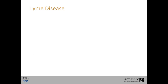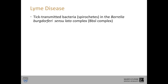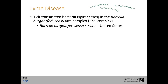Lyme disease is caused by bacteria transmitted by ticks. These bacteria are spirochetes — spiral-shaped organisms shown in the upper right-hand corner of the screen. They are in the large complex called Borrelia burgdorferi sensu latu complex, a group of closely related organisms, many capable of causing Lyme disease. In the United States, Borrelia burgdorferi sensu strictu is the main cause of Lyme disease. Going forward, for simplicity, I'm just going to call this Borrelia burgdorferi.